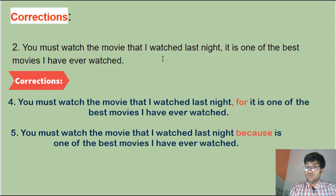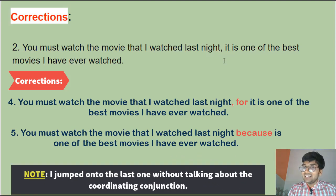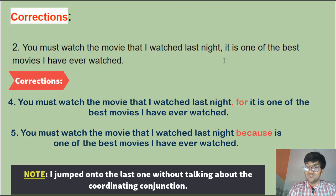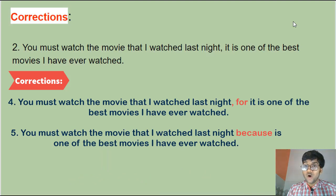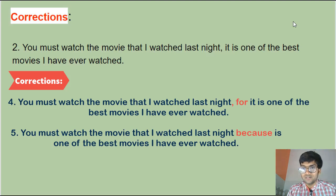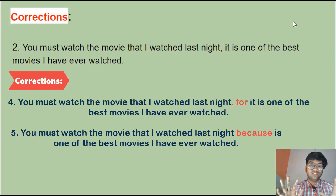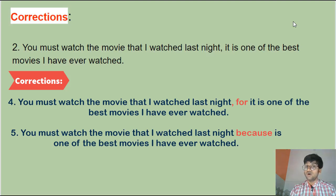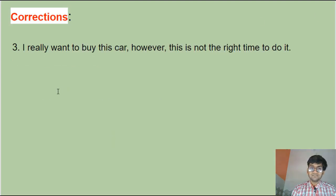Method four using a subordinating conjunction: 'You must watch the movie that I watched last night because it is one of the best movies I have ever watched' — or using 'as' or 'since.' Also, one more thing: when two sentences are joined together using a comma, this error is specifically called a comma splice. It's a run-on sentence, and this particular type — two sentences joined by a comma — is called a comma splice.